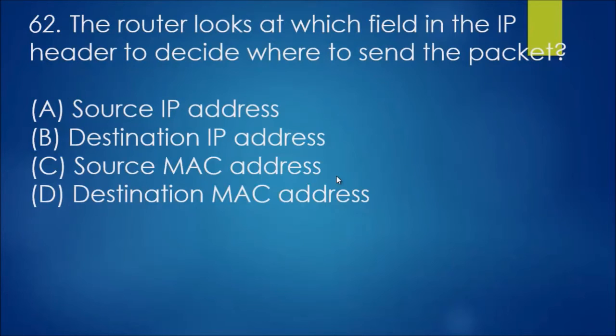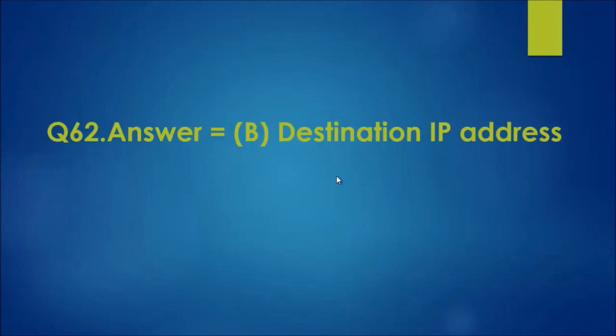Question 62: The router looks at which field in the IP header to decide where to send the packet? We're referring to IP header, so it has to be IP, and we are the source because we are sending it, so that would mean it would be the destination IP address.